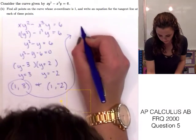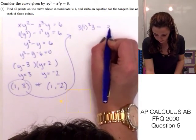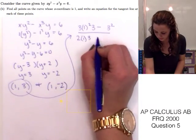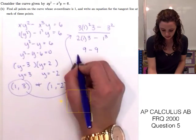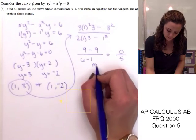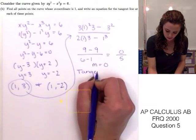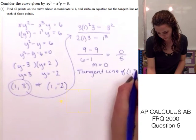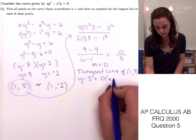Plugging in x=1 and y=3: we get 3 times 1² times 3 minus 3², all over 2 times 1 times 3 minus 1³. On top we have 9 minus 9, and on the bottom 6 minus 1, which gives us 0 over 5. So the slope is 0, and the tangent line is y minus 3 equals 0 times (x minus 1).